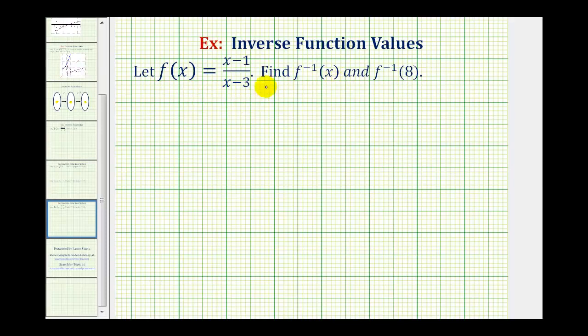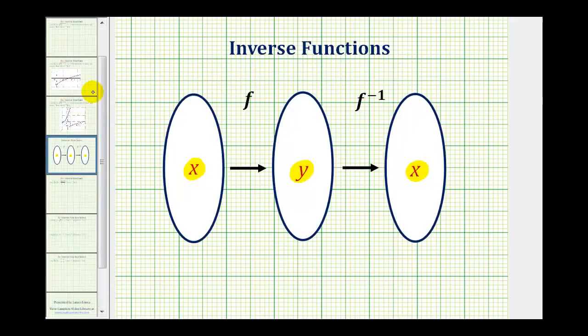we need to understand that the inverse function undoes the operation of f(x). For example, if x is the input into function f and y is the output, these outputs become the inputs into the inverse function, which return the original value of x. These two functions undo each other.